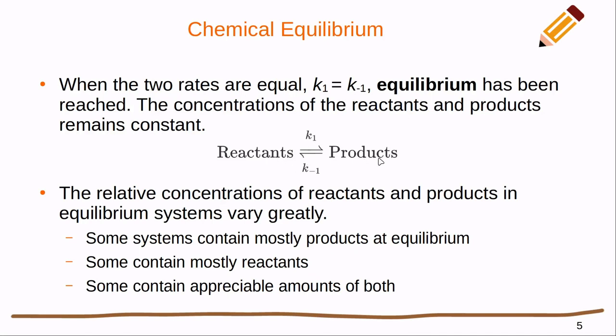This equilibrium point could lie far to the right where we have a lot of products and very few reactants. It could lie far to the left where we have a lot of reactants and very few products. Or it could be somewhere in the middle where we have an appreciable amount of both. That depends on the specific system we're studying.